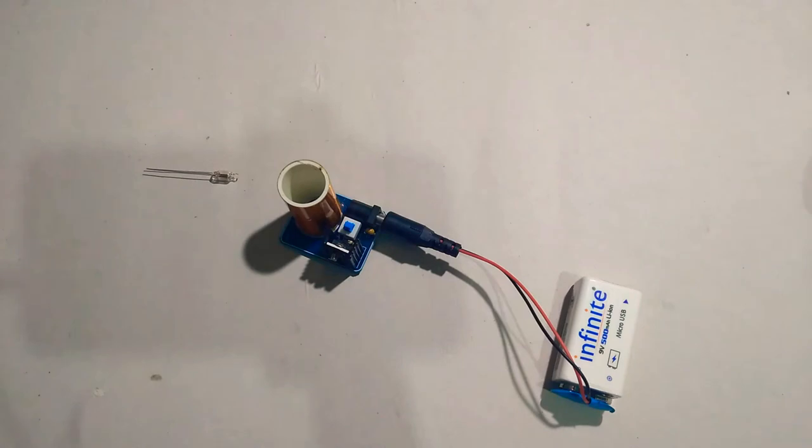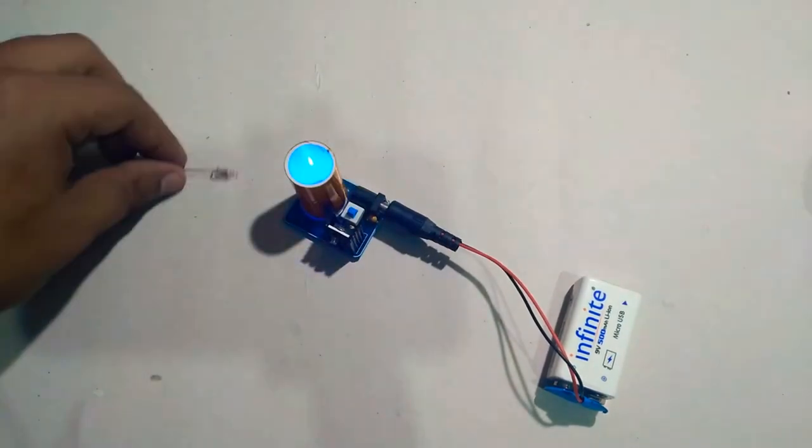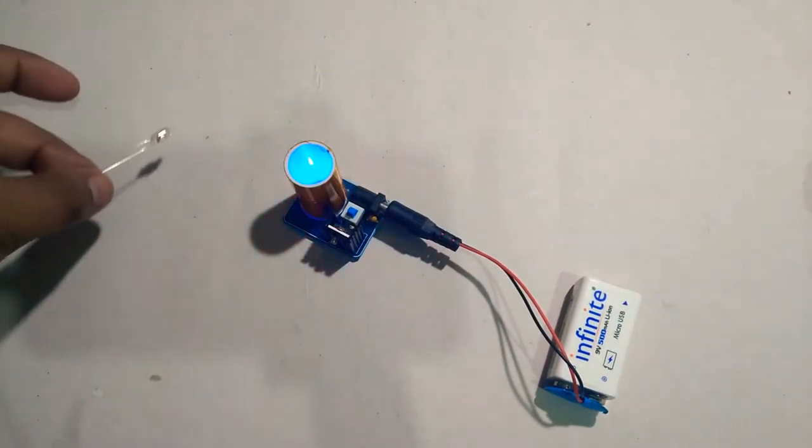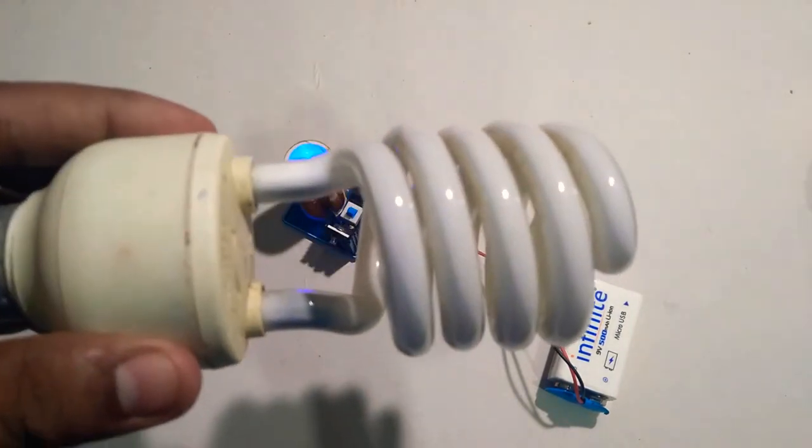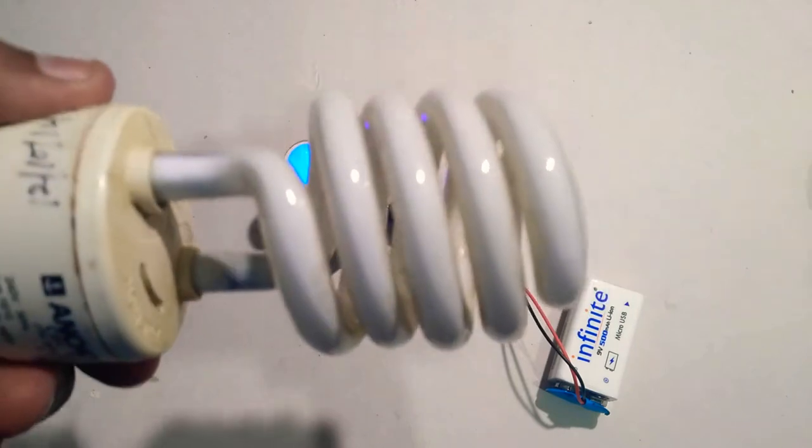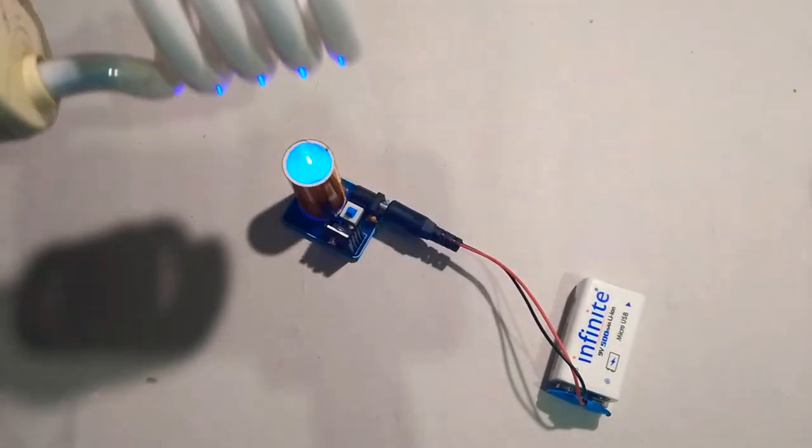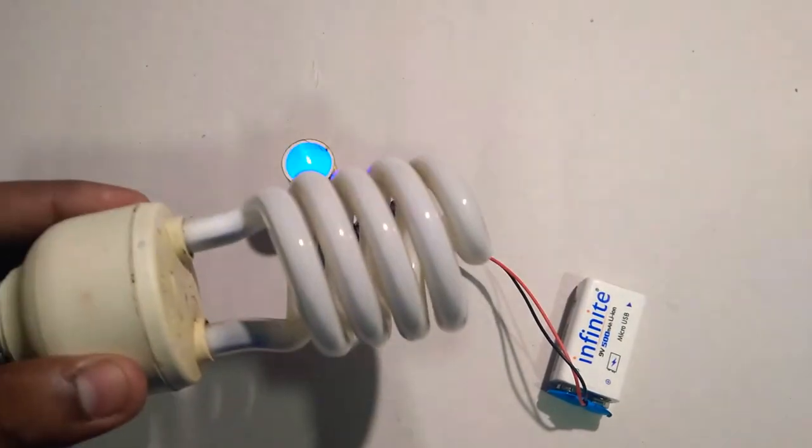This mini Tesla coil can light up this small neon bulb but it can also light up a bigger CFL bulb. This is a 27 watt one. It can even light up this one, see.